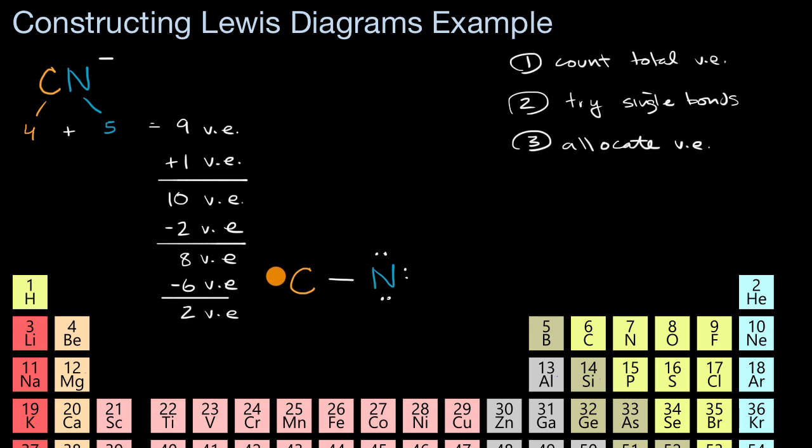Let me give carbon two valence electrons like that. And there I have used up all of my valence electrons. Now let's see how happy everyone is. Nitrogen has eight valence electrons hanging around, but carbon only has four.